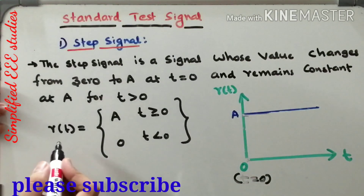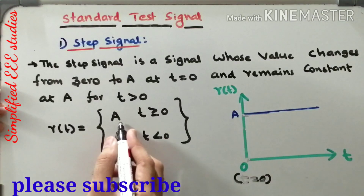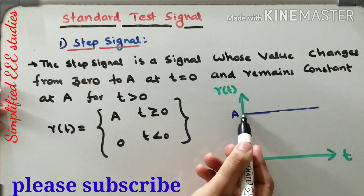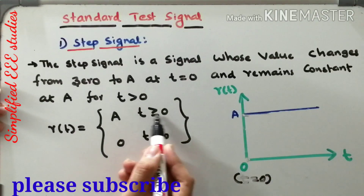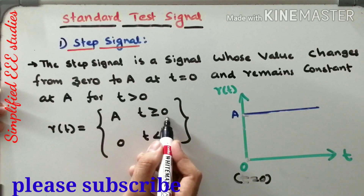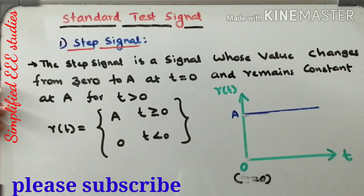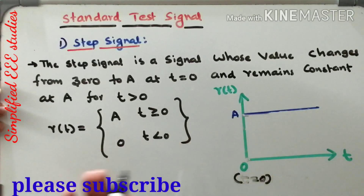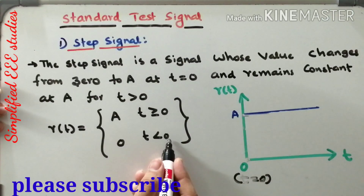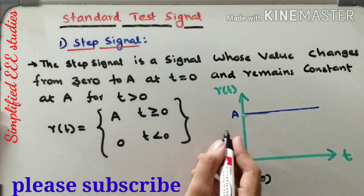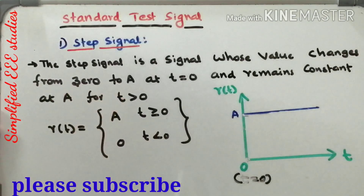Mathematically we can write r(t) equal to A, where t is greater than or equal to 0, and r(t) is equal to 0 if the value of t is less than 0. So this type of signal is known as step signal.